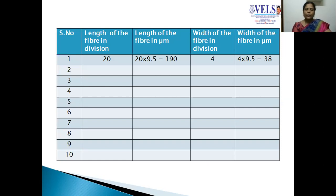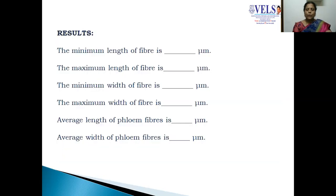We will be converting these divisions into micrometers, which gives about 190 micrometers. Similarly, for the width of the fibers, we convert into micrometers by multiplying by the calibration factor. We measure in this way for 25 fibers and record them in a table. Among these 25 fibers, we identify which fiber has the maximum value and which has the lowest value, and we calculate the average. We then report the minimum length, maximum length, and average length of the fibers, as well as the minimum, maximum, and average width of the fibers. Thank you.